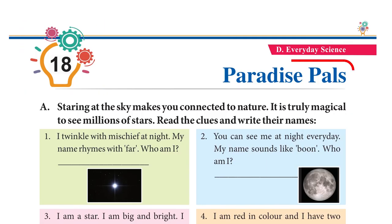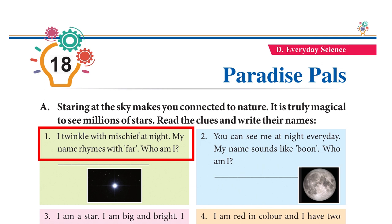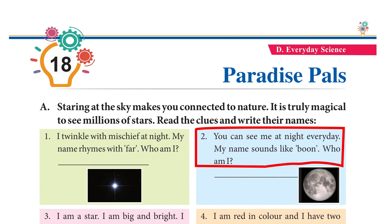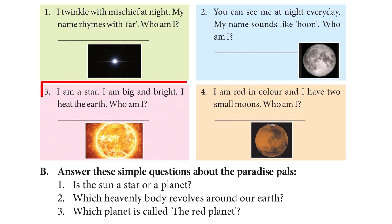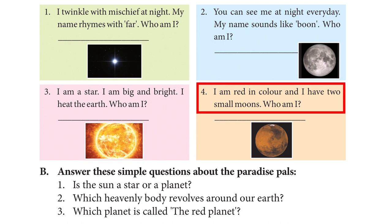Chapter 18: Paradise Pals. Staring at the sky makes you connected to nature — it is truly magical to see millions of stars. Read the clues: I twinkle at night and my name rhymes with 'far' — star. You can see me at night every day and my name sounds like 'boon' — moon. I am a big, bright star that heats the earth — sun. I am red in colour and have two small moons — Mars.